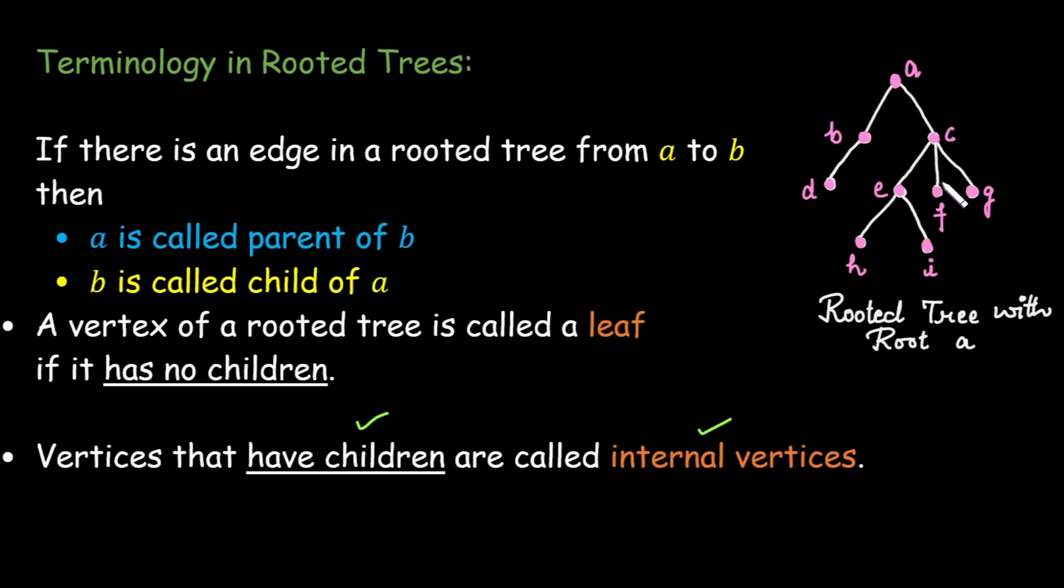C has three children so we again call it an internal vertex. Even E is an internal vertex. In short every vertex of a tree is either a leaf or internal vertex.